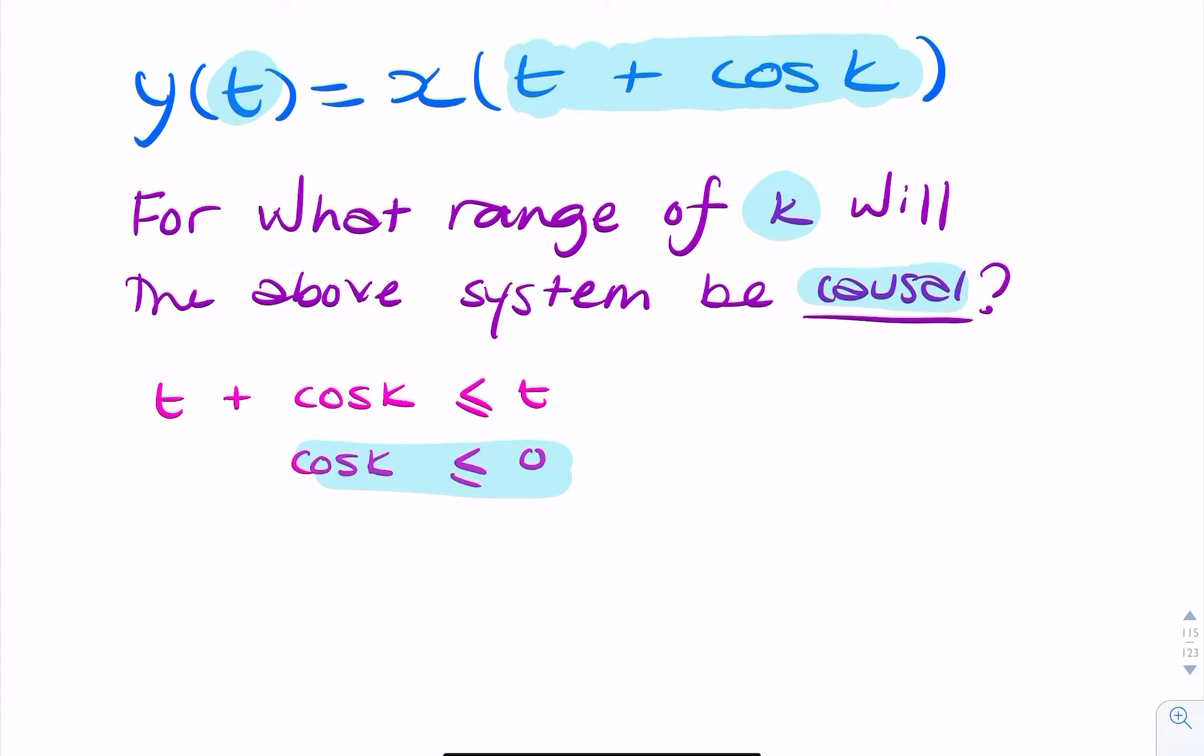And we're told in the question that the absolute value of k is limited. It's less than 2 pi. So k ranges between minus 2 pi and pi. So if we just remind ourselves of the plot of cosine k, it looks something like this. So this is from 0 to 2 pi in the positive,